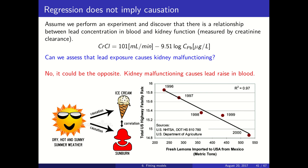A second problem is that there could be a third cause that we are not measuring, and this third cause is making the two variables to be correlated or to have a good regression between each other.